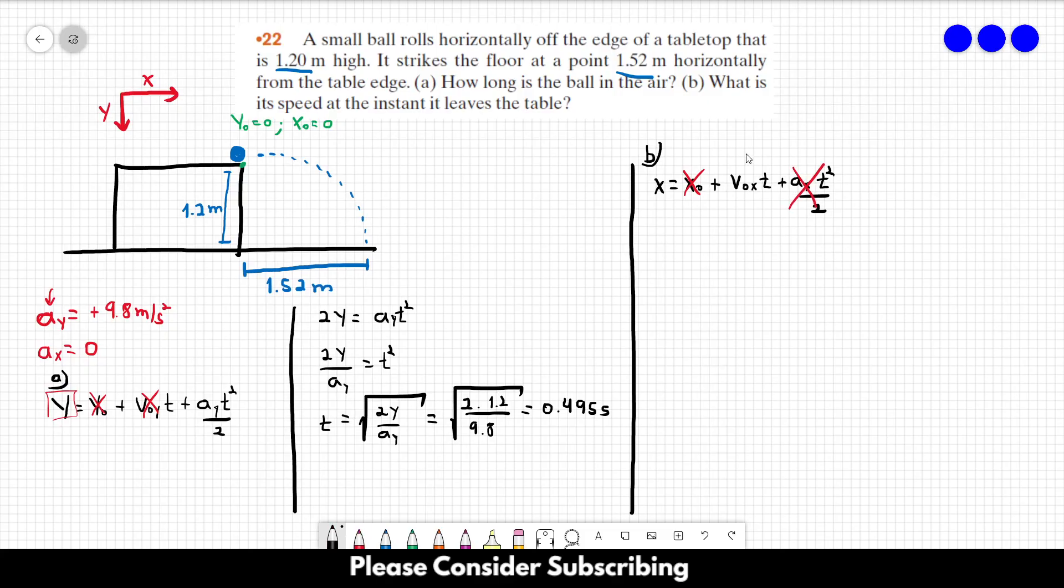So if we want to find v0x, we just have to isolate it. So v0x is equal to x over t, and this is equal to 1.52 divided by the t that we just found over here, so it gives us 0.495.